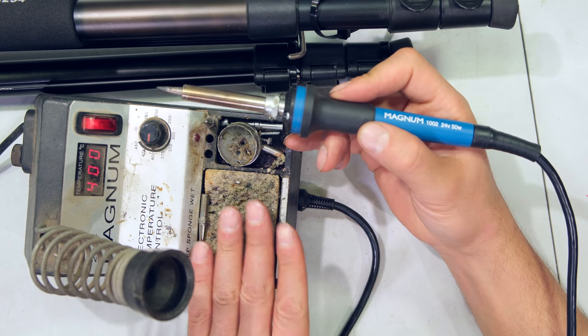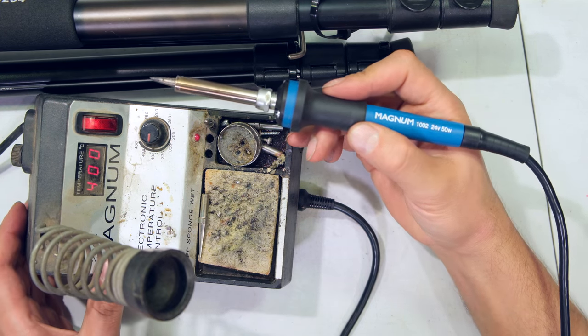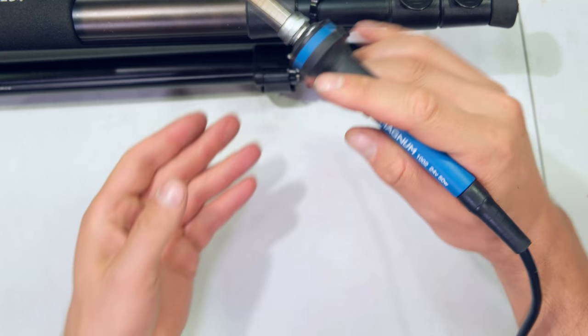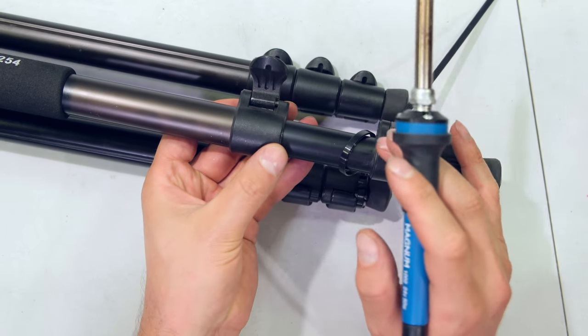So in order to do the repair, I'm using a soldering iron. I've set it to about 400 degrees Celsius and I'm just going to reform that plastic so it stops that cable tie from sliding off.